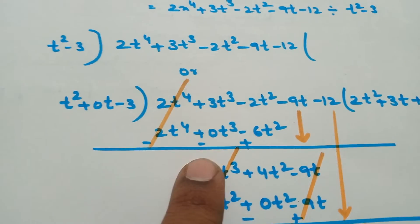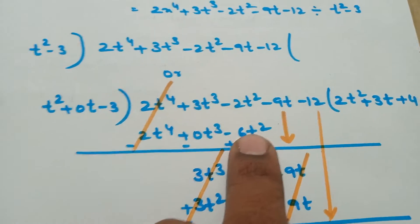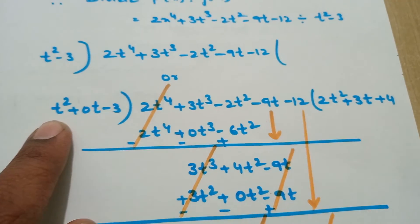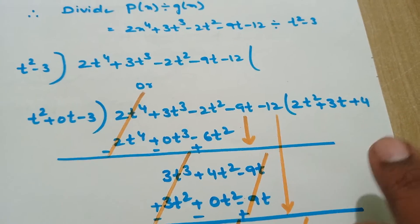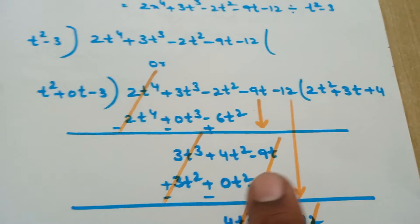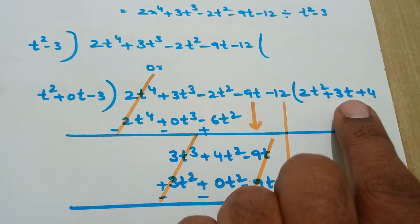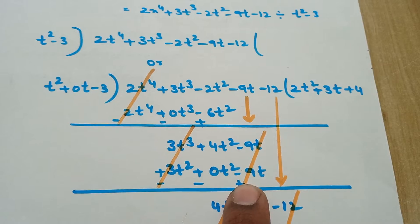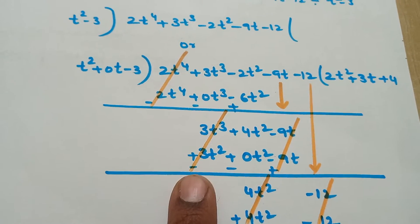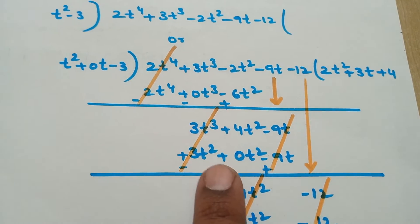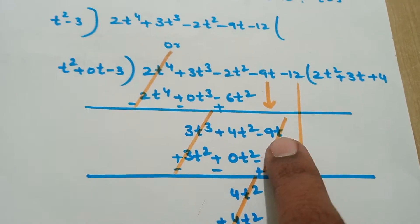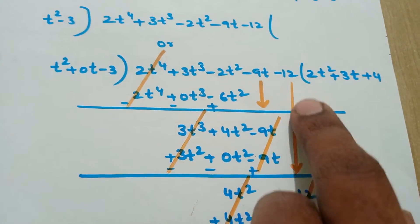We get 3t³ here, and 6 - 2 = 4, so we get 4t². Take the next step: -9t. For t², what we multiply to become 3t³? We multiply 3t. t² into 3t becomes 3t³, 0t into 3t is 0t², and -3 into 3t is -9t. Now by doing subtraction the signs will be different. 4t² - 0t² = 4t², and the -9t terms cancel. Take down the last term, -12.